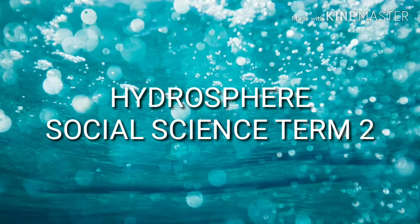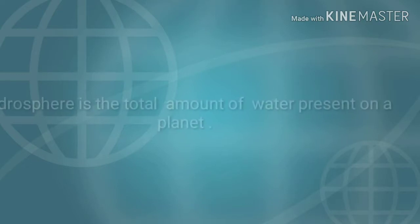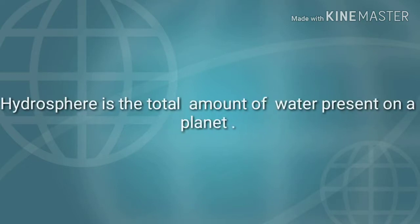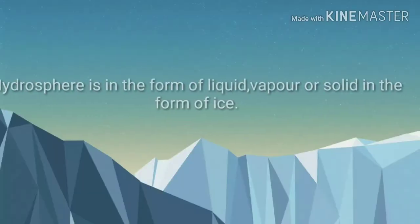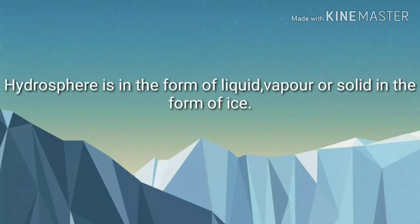Hydrosphere — Social Science Term 2. The hydrosphere is the total amount of water present on a planet. It exists in the form of liquid, vapor, or solid in the form of ice.